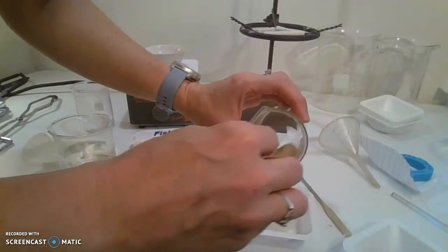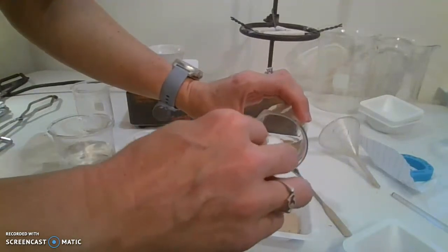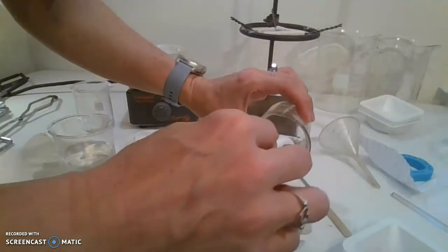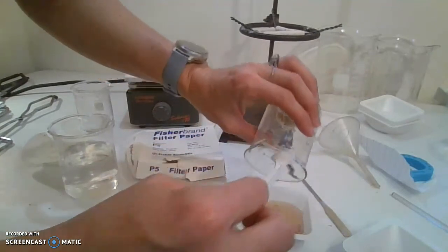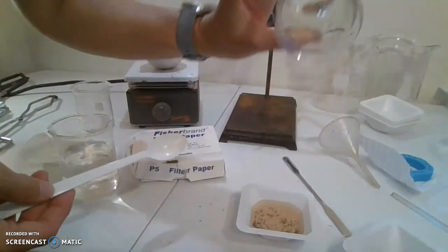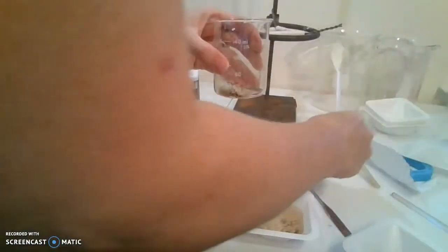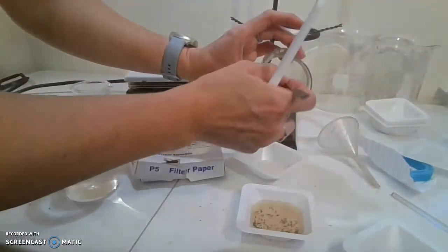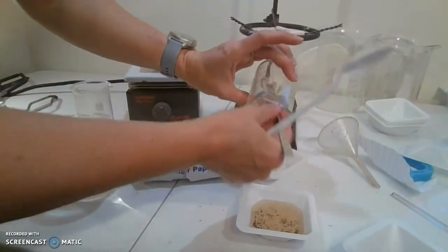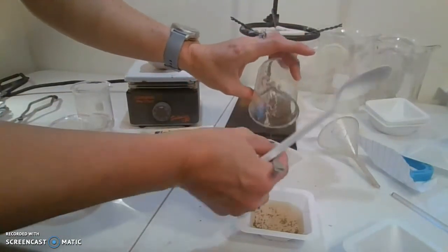They are less dense, so if you're really careful with the water, you can usually pour the poppy seeds off, leaving the sand behind. You can empty your sand into another one of these weigh boats.